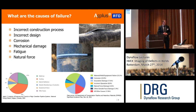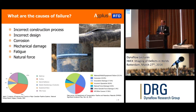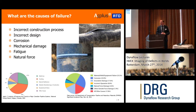It depends on the degradation mechanism. There are different degradation mechanisms — fatigue being one of them. But there are also others, for example incorrect construction of the process, defects in welds, or an incorrect design. If the pipeline wasn't designed to fit its purpose, that could be the cause of failure. Also, corrosion leads to wall thickness loss, which affects the strength of the pipeline and can cause failure. Another common one is mechanical damage — for example, landslides or a backhoe digging into the earth and hitting a pipeline, which can eventually lead to failure.